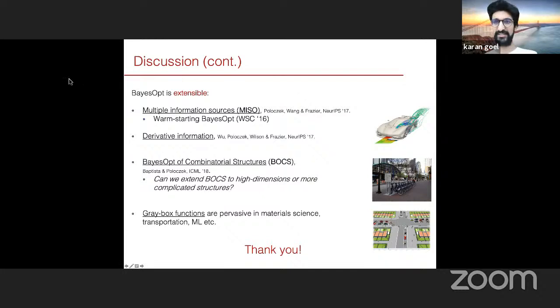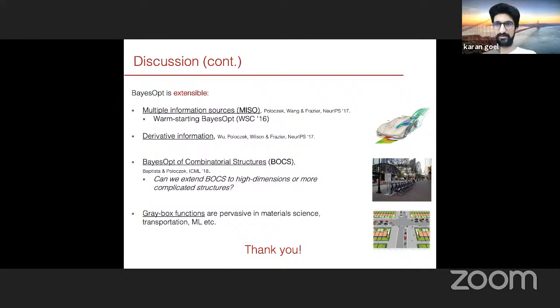Thanks so much for giving us that introductory overview, it was really great. As a reminder, the audience can ask questions in the chat. One thing I'm curious about is where Bayesian optimization is today in terms of the types of tools available. When I was in my master's in 2016, Yelp had a library called MOE. I had mixed experiences comparing to random search. I'm curious about the ability to scale gracefully with dimensionality — are there good tools now that you can just use?